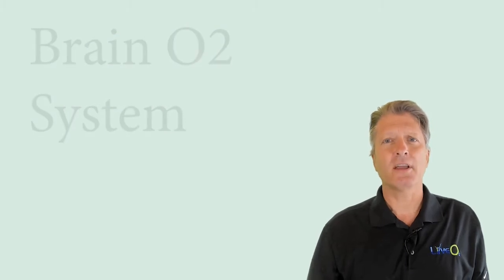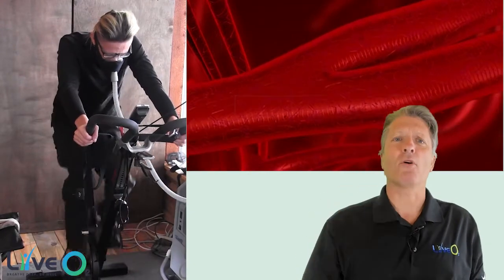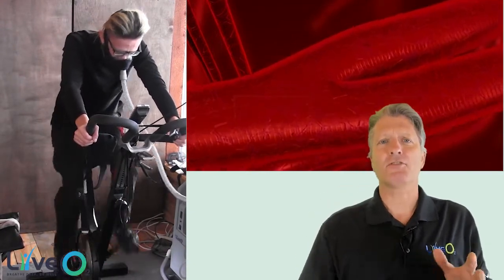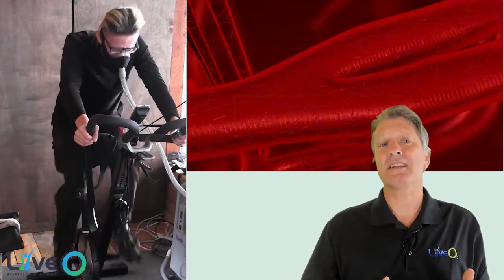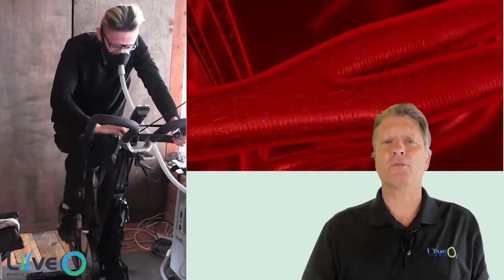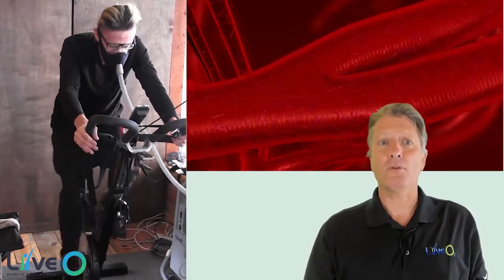Brain O2 tricks your body into super oxygenating your brain. Strenuous exertion with low oxygen air makes your body squirt as much blood as possible through your brain. Doppler measurements on animals show that this process sends about four times more blood than normal through your brain.